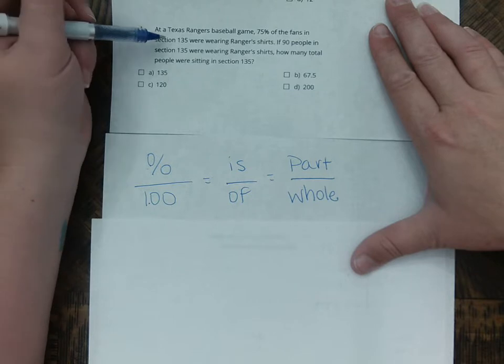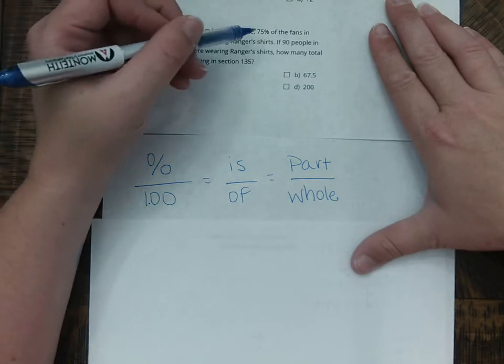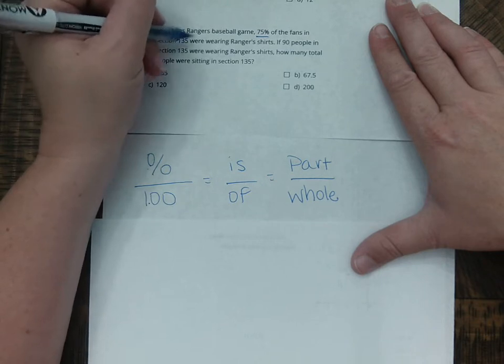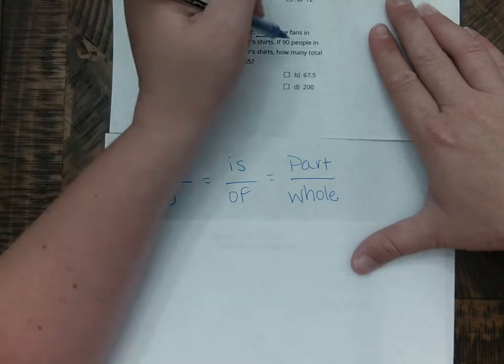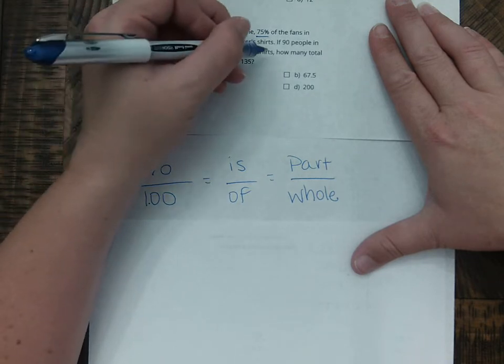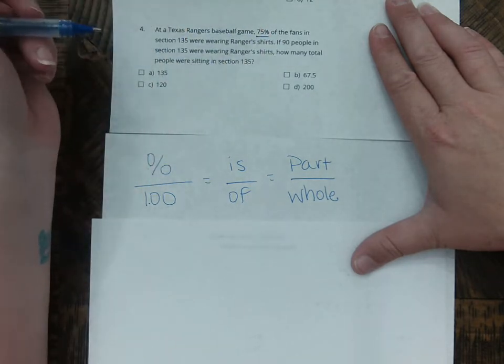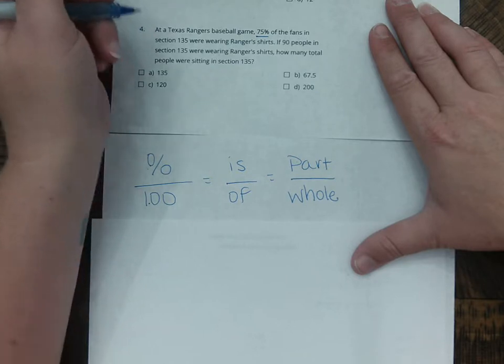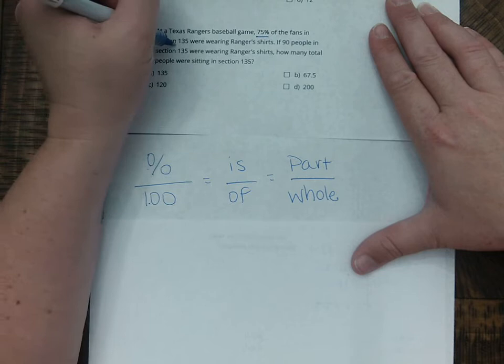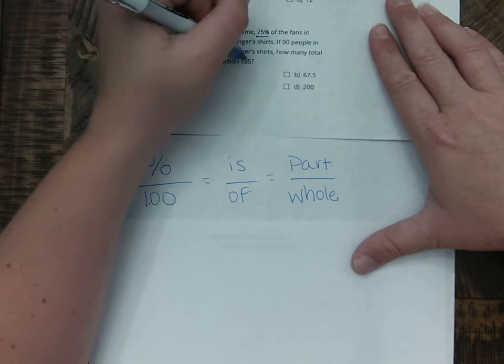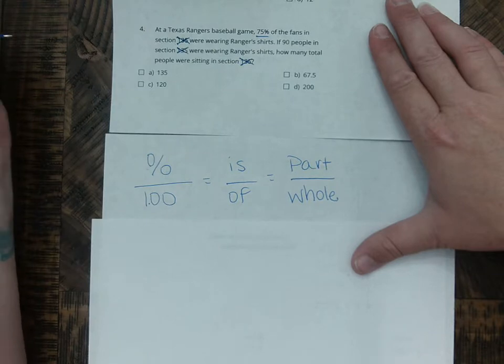So let's look at number four. It says at a Texas Rangers baseball game, 75% of the fans in Section 135 were wearing Rangers shirts. If 90 people in Section 135 were wearing Rangers shirts, how many total people were sitting in the section? So it gets confusing because we see the number 135 so much, but that's just talking about the section they're sitting in. So I'm going to cross out 135 so that I don't get confused anymore.